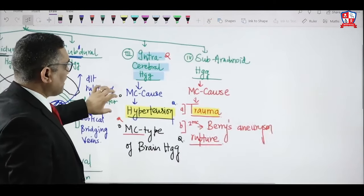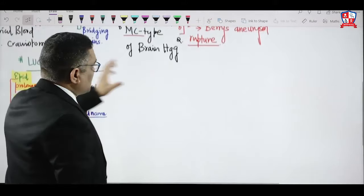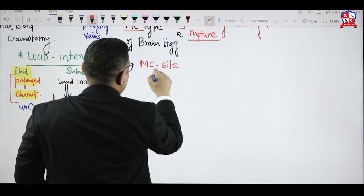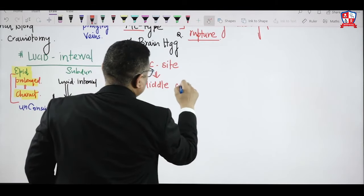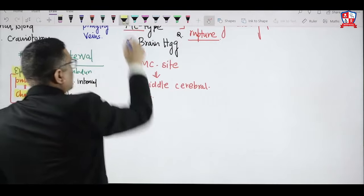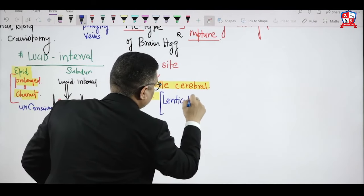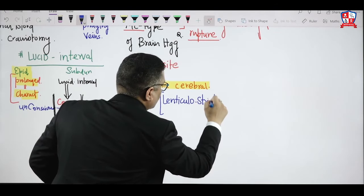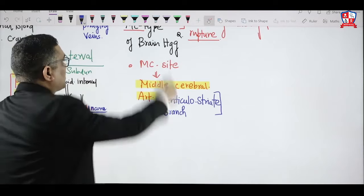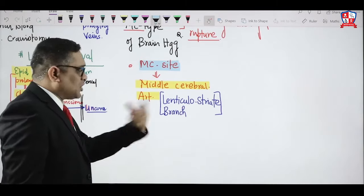For intracerebral hemorrhage, as we have learned, hypertension is the most common cause. The most common site for intracerebral hemorrhage is the middle cerebral artery — specifically the lenticulostriate branch of the middle cerebral artery.